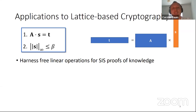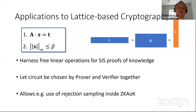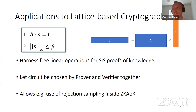For our application to lattice-based cryptography, if we want to prove knowledge of s such that A·s = t — a standard SIS instance — this involves multiplying s by A and proving s is small. The multiplication with A comes for free since linear operations are free. The prover and verifier can also choose the circuit together, lowering overall circuit size and enabling techniques like rejection sampling inside the ZK argument.